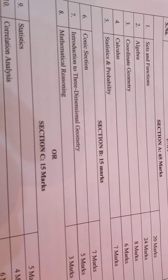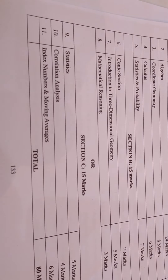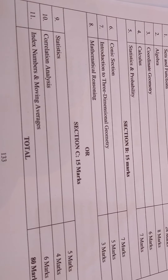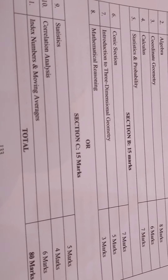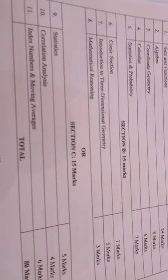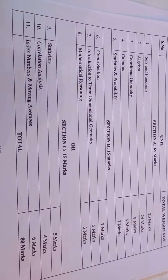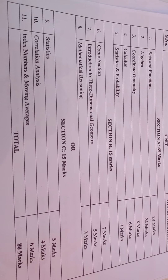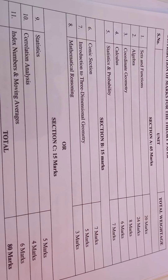If you are not opting Section B and are opting Section C, then you have to cover up: statistics for 5 marks, correlation analysis for 4 marks, and index number and moving average for 6 marks. The total of 65 and 15 is 80, so that is your complete 80 marks theory paper. I think you have noted down this part.